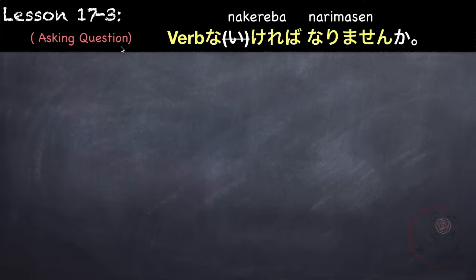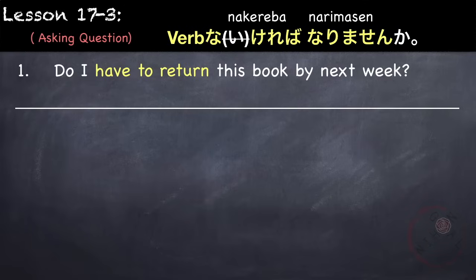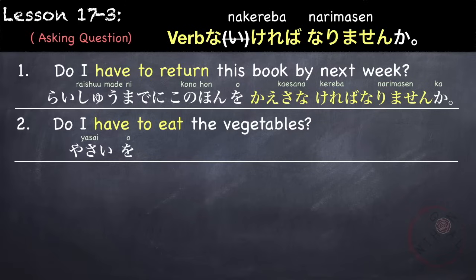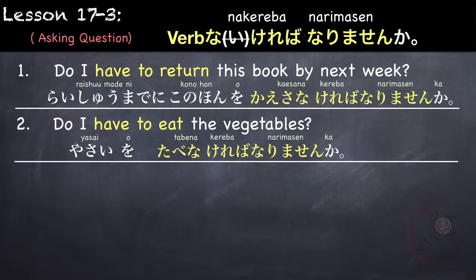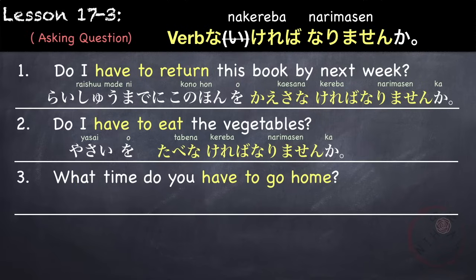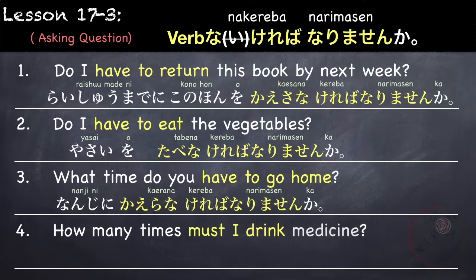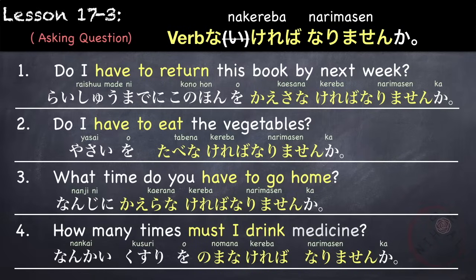We can also ask questions using this pattern by adding ka at the end. For example: 'Do I have to return this book by next week?' — Raishu made ni konohon wo kaesanakereba narimasen ka. 'Do I have to eat the vegetables?' — Yasai wo tabenakereba narimasen ka. 'What time do you have to go home?' — Nanji ni kaeranakkereba narimasen ka. 'How many times must I drink medicine?' — Nankai kusuri wo nomanakereba narimasen ka.